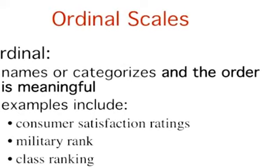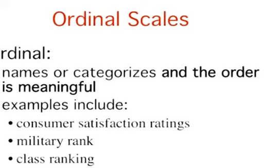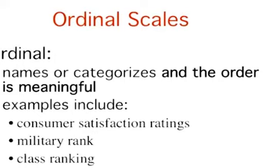Whereas nominal scales don't allow comparisons in the degree to which two subjects possess the dependent variable, just this kind of comparison is possible with ordinal scales. For example, our satisfaction ordering makes it meaningful to assert that one person is more satisfied than another with their microwave ovens. Other examples of variables measured at the ordinal level are military rank: private, lieutenant, captain, general, etc., and class ranking: first-in-class, second-in-class, and so on.